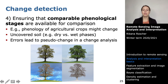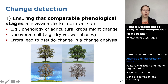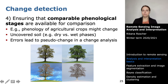The last requirement is to ensure comparable phenological stages. The phenology of agricultural crops can change between years — in one year, harvest may occur in August; in the next, in September for the same crop. It is not enough to compare the same calendar time steps; you need to consider phenological stages when comparing plant development across years. Similarly, dry soil looks different from wet soil, and ignoring this can lead to pseudo change in the analysis.